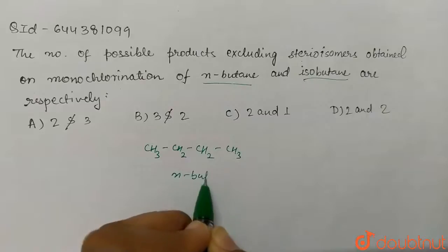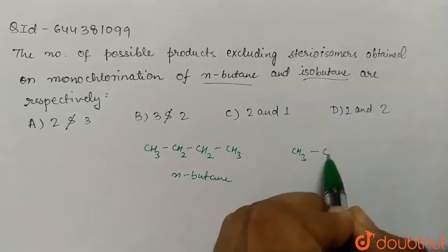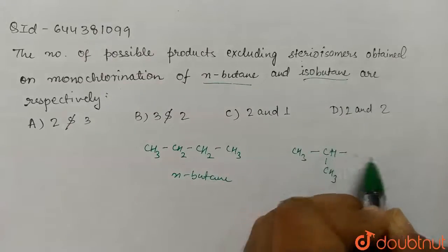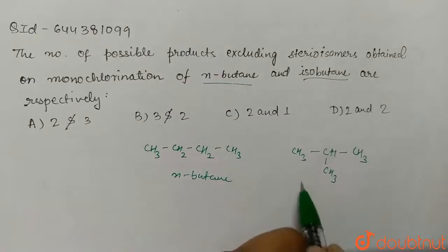This is N-butane. Then we have isobutane which is CH3, C, CH3, CH and CH3. So this is isobutane.